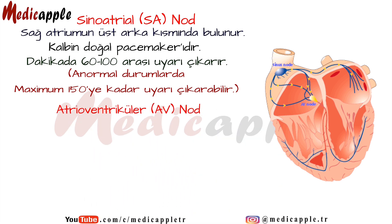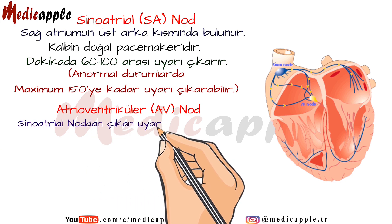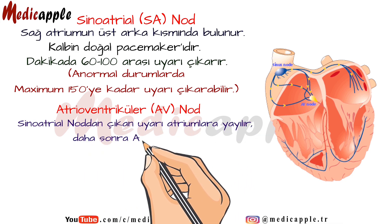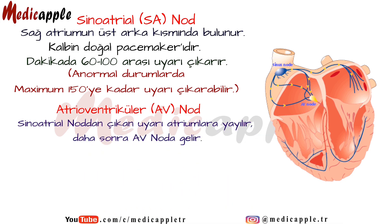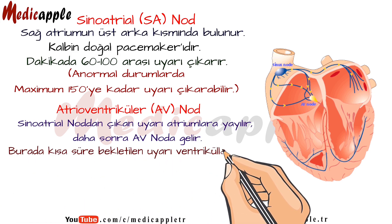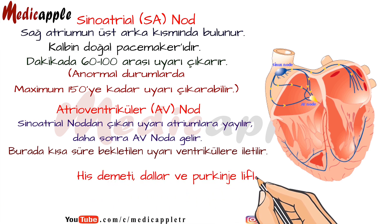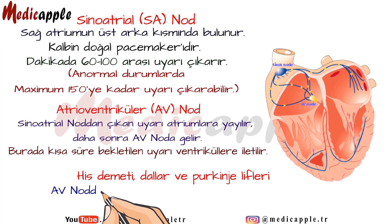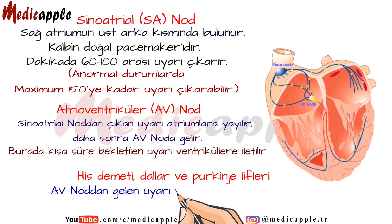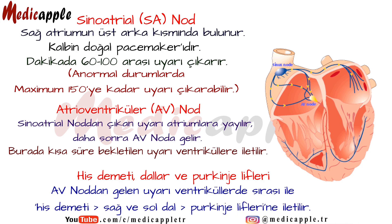Atrioventricular AV node. The stimulus from the sinoatrial node spreads to the atria, then reaches the AV node. The stimulus, kept here for a short time, is transmitted to the ventricle, His bundle, branches, and Purkinje fibers. The stimulus from the AV node is transmitted to the His bundle, then right and left branches, then Purkinje fibers in the ventricles, respectively.